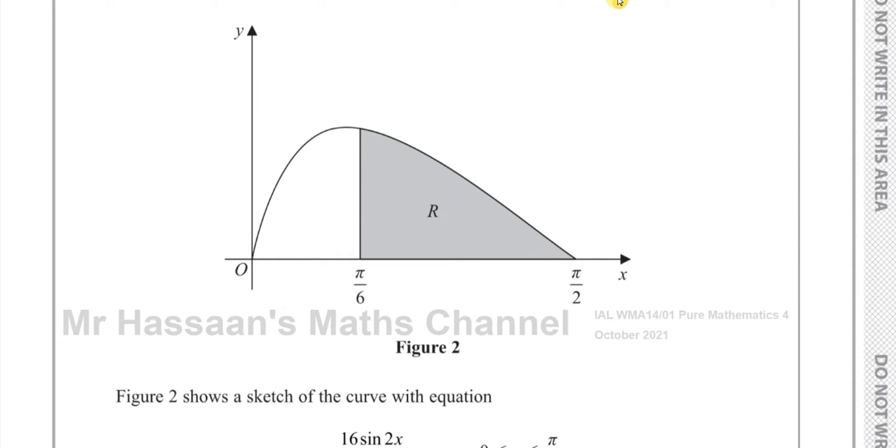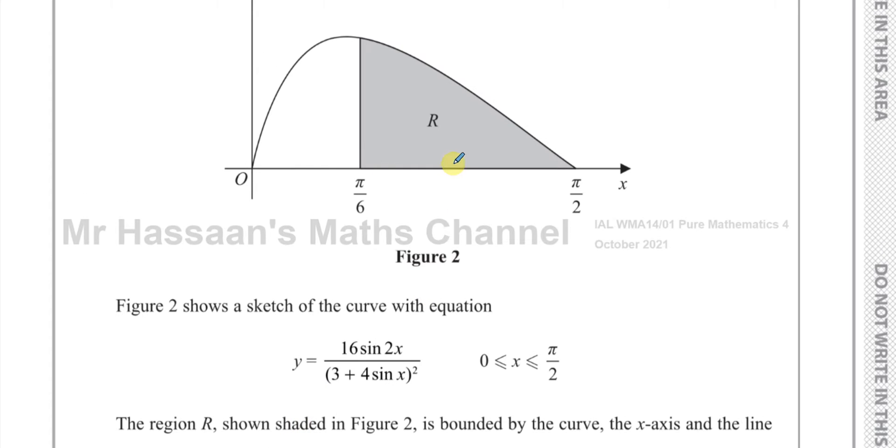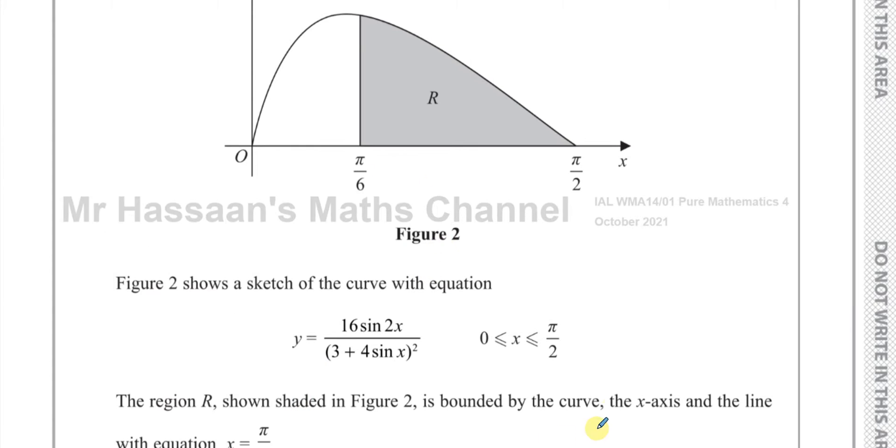This question is about integration. It tells us that figure 2 shows a sketch of the curve with equation 16sin(2x) over (3 + 4sinx) squared, where x is between 0 and π/2. The region R shown shaded in figure 2 is bounded by the curve, the x-axis, and the line with equation x = π/6.